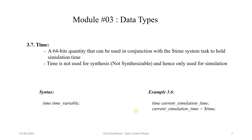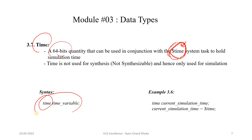The time data type is a 64-bit quantity mostly used in conjunction with the $time system task. The $time system task returns the current simulation time, which is useful for debugging — to check at what simulation time a particular activity occurs. To use it, declare a variable of type time; for example, current_simulation_time of type time, which gets its value from the $time system task.